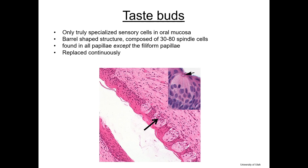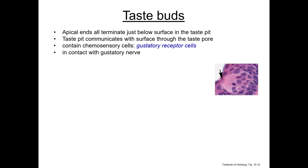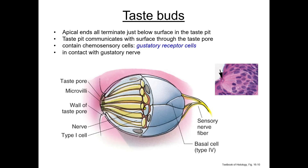Taste buds are the specialized sensory components of oral mucosa, responsible for sampling the chemical composition of ingested material. There are roughly 250 taste buds per circumvallate papilla, but they are found in all papillae except the filiform. These barrel-shaped structures contain chemosensory cells — gustatory receptor cells — that are in contact with terminals of the gustatory nerves. Each taste bud contains specialized receptor cells, supporting cells, and basal cells which continuously regenerate the receptor cells, as taste bud receptor cells have only a 10- to 14-day lifespan.